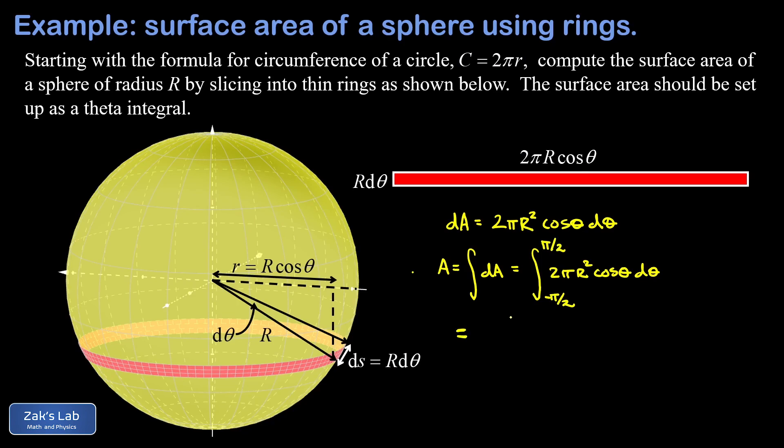I'm going to take advantage of the symmetry of the cosine function. That's an even function, which means we can cut the integration interval in half and just double the result.